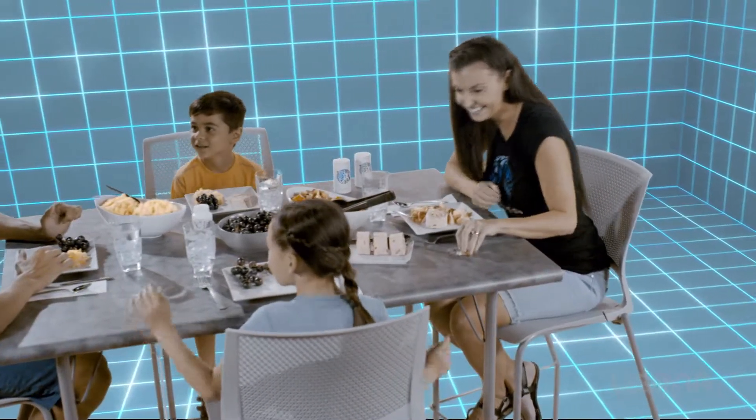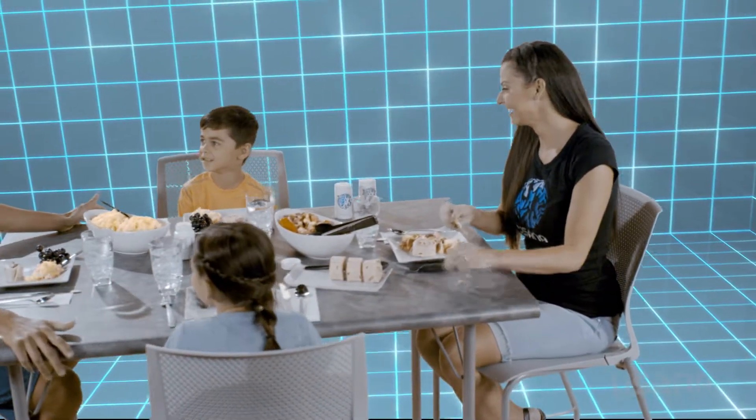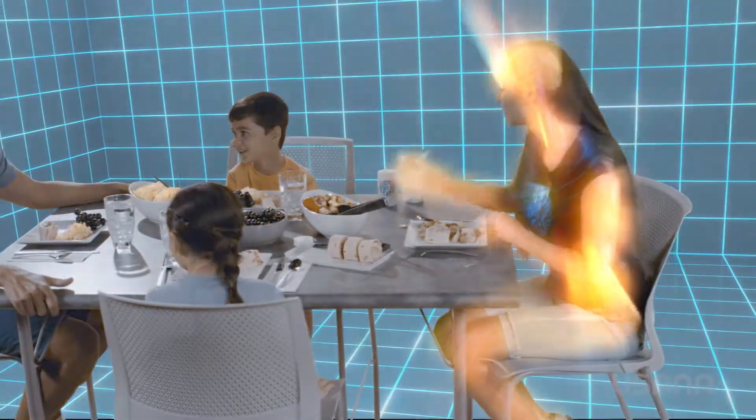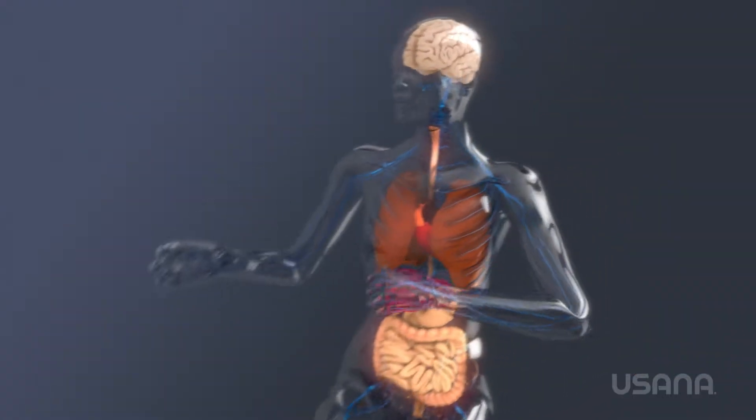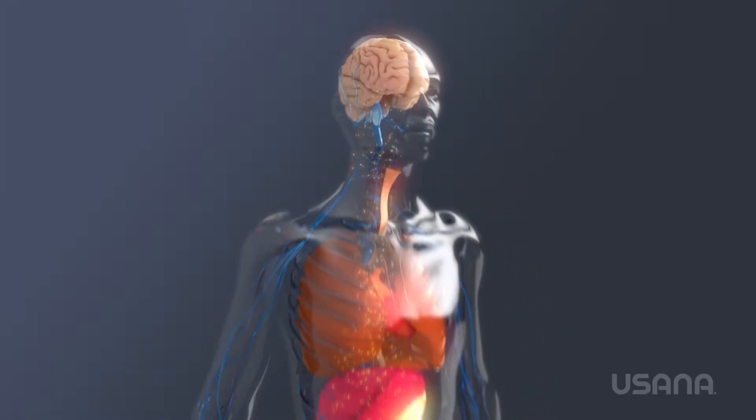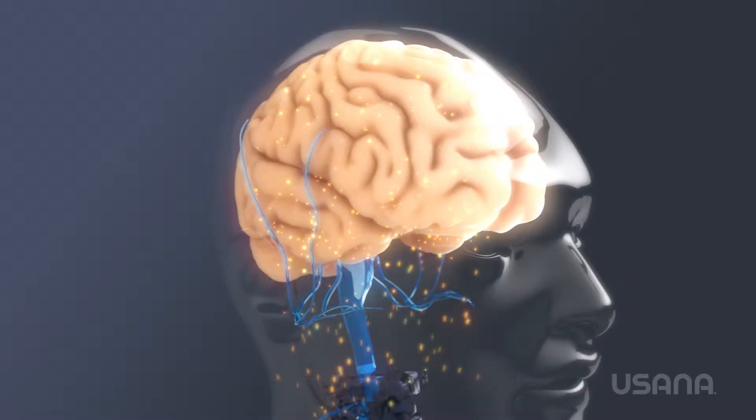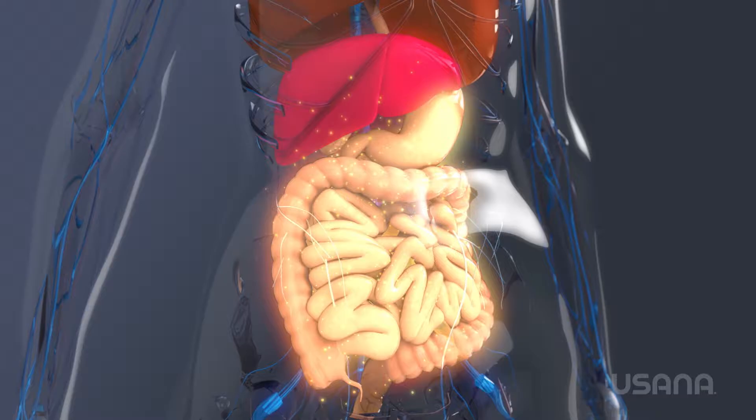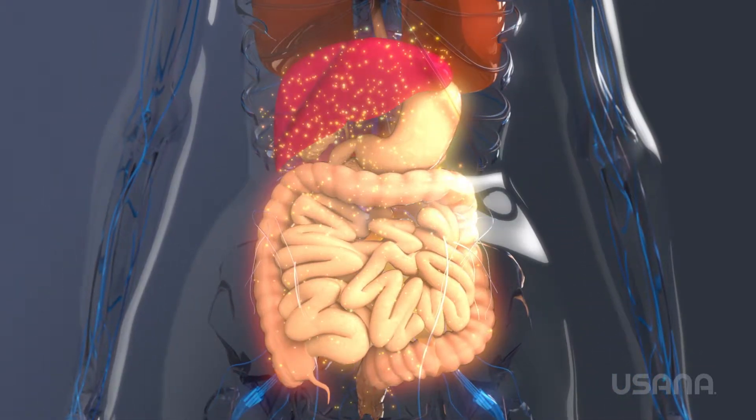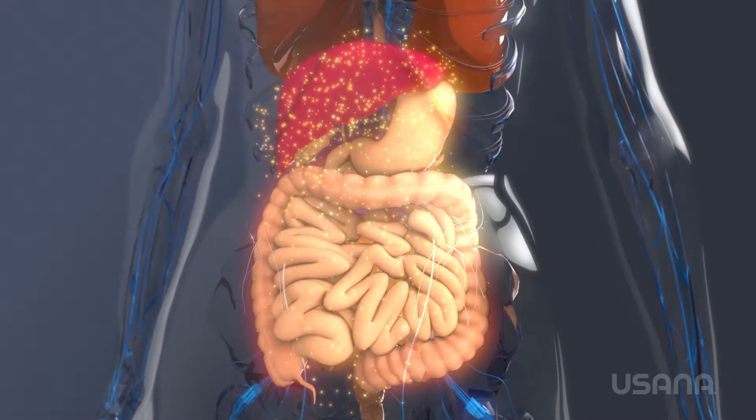For example, you eat to fuel your body. The nutrients you consume are of course critical, but it's cellular communication that allows you to make use of that fuel. Molecular signals from a variety of places in the body travel to your brain and influence your feelings of hunger. More signals are necessary to call for the right digestive juices that help break down carbs, fats and proteins to meet cellular needs and produce energy.